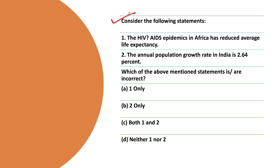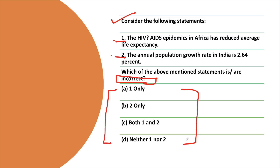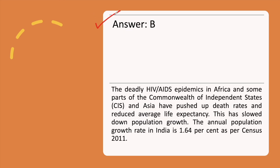The next question: Consider the following statements. Statement 1: The HIV-AIDS epidemic in Africa has reduced average life expectancy. Statement 2: The annual population growth rate in India is 2.64%. Which of these statements are incorrect? Make sure you have read the question and the options properly before deciding. The correct answer is option B, with the explanation.